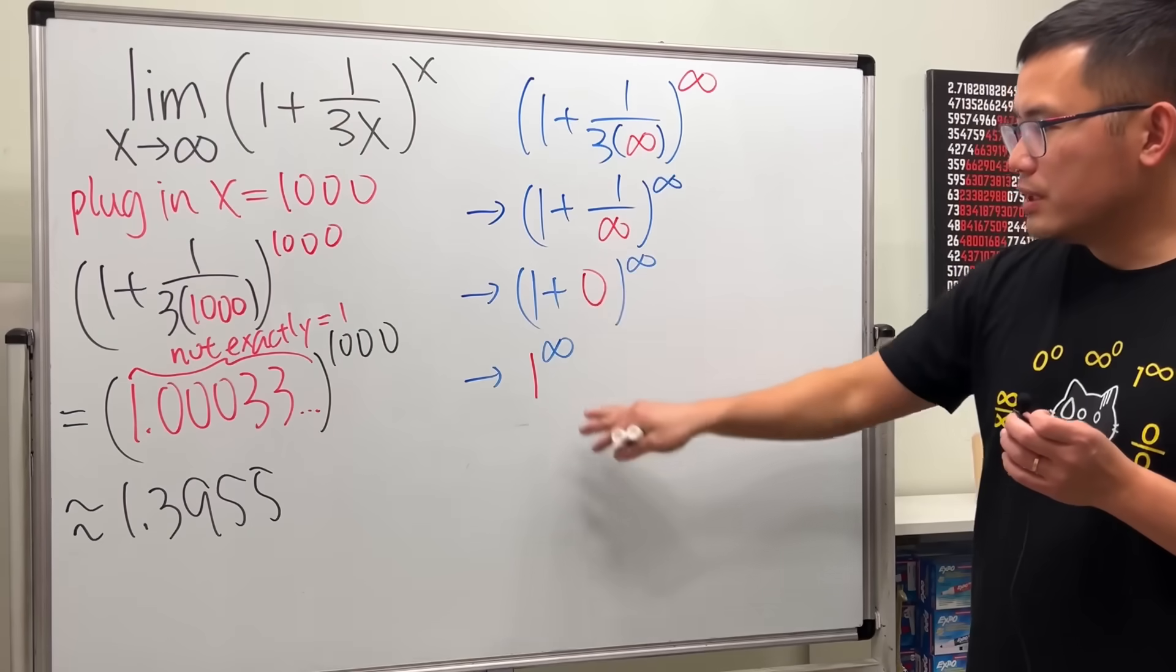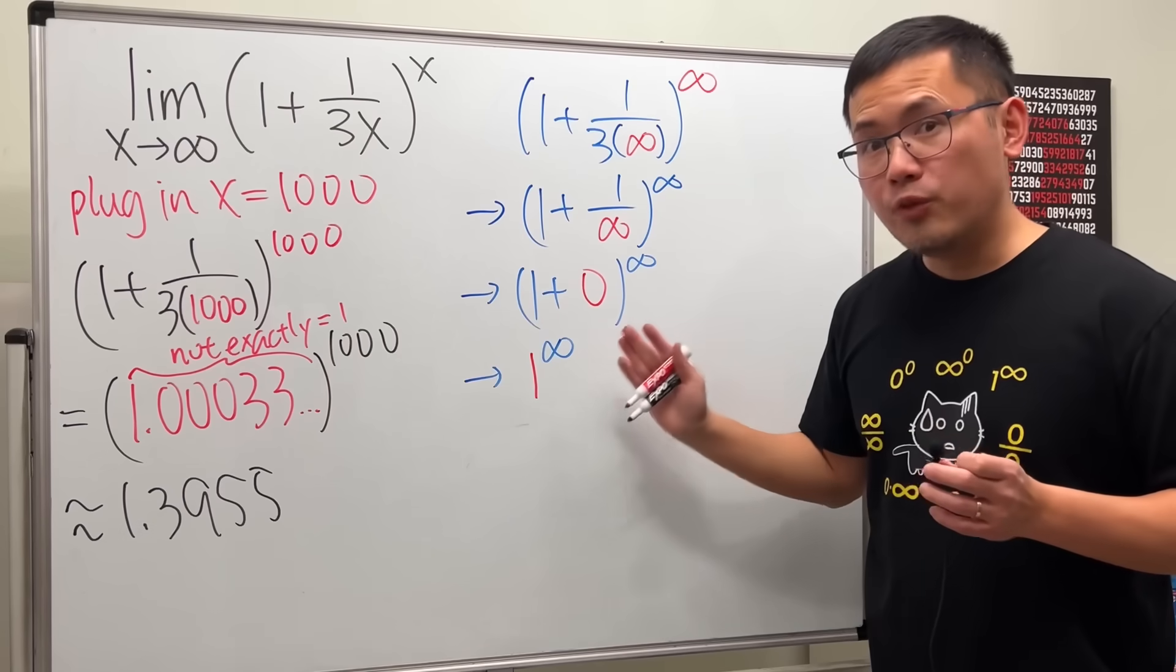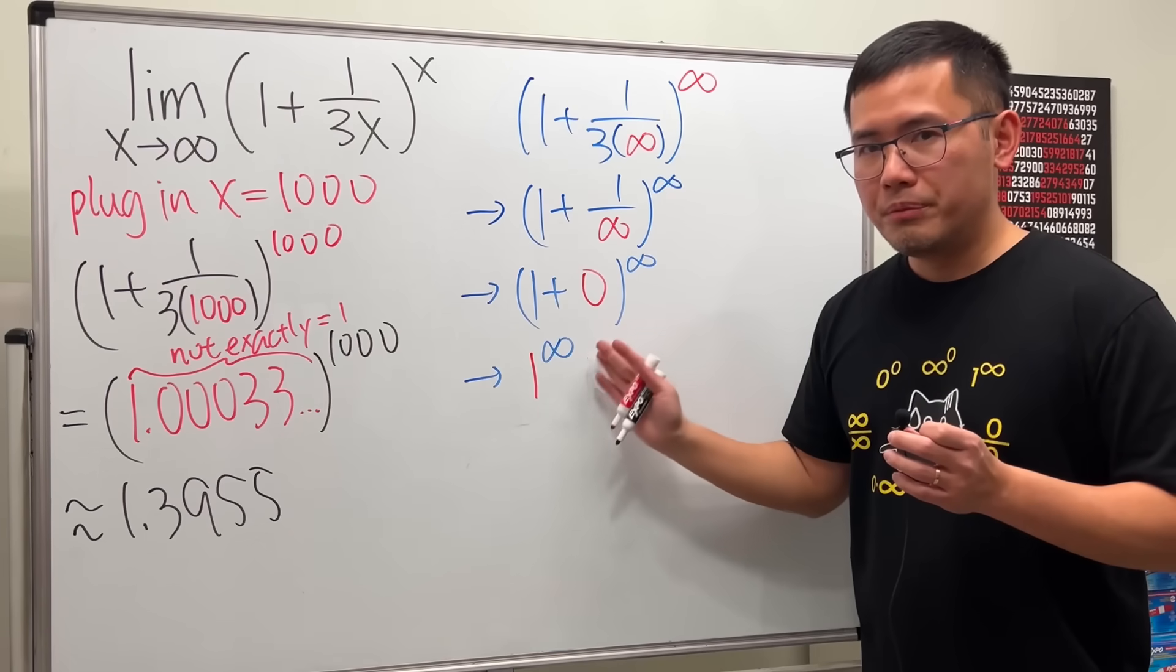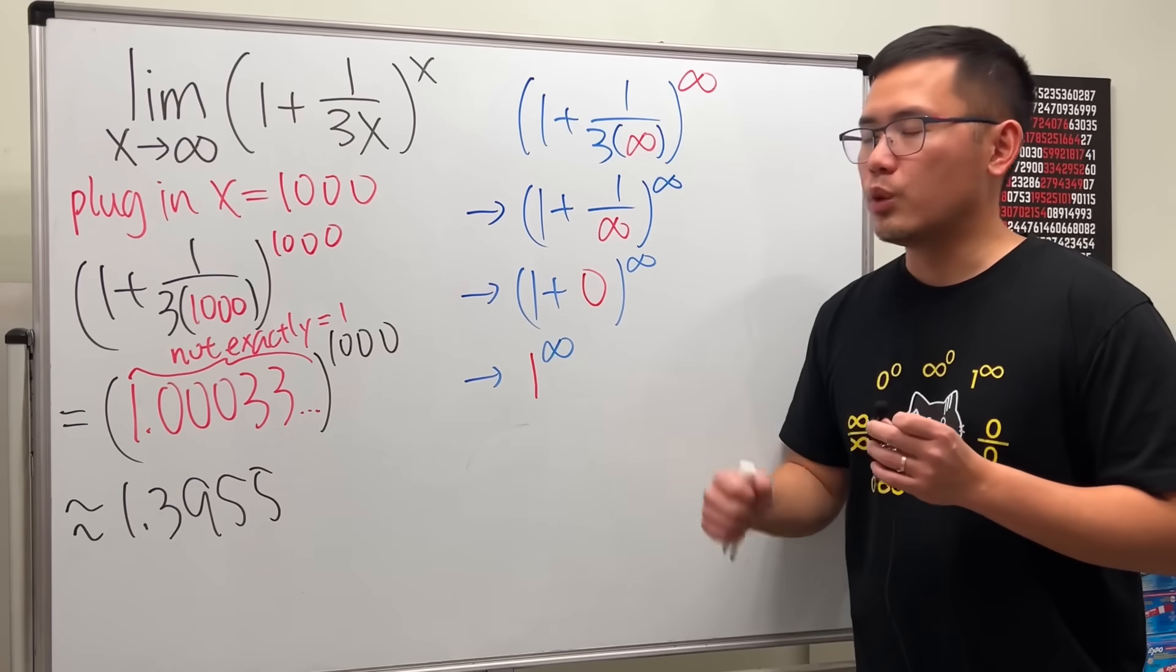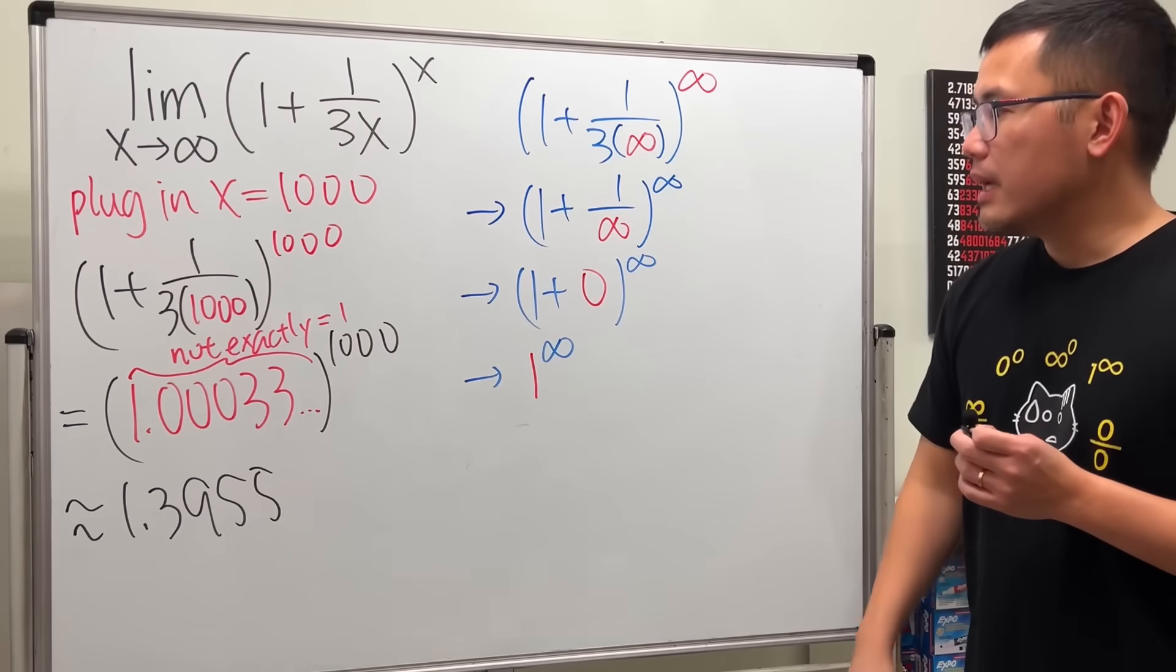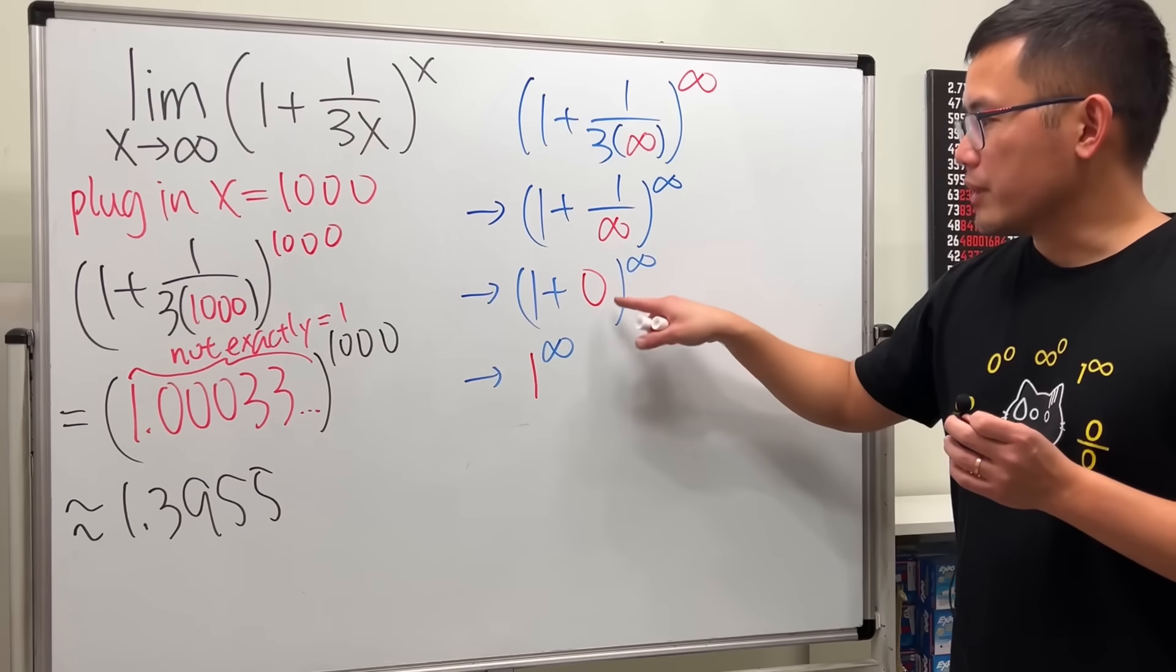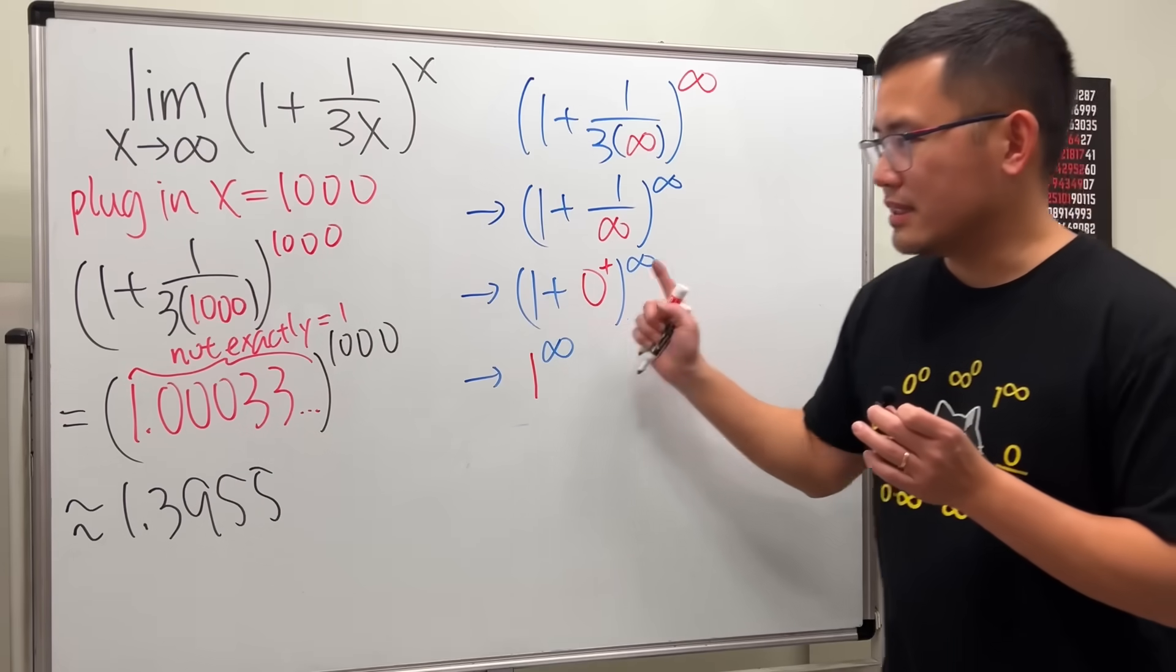So when people do this, it's just like a quick hand to figure out limits. So if you're working with the limit forms and end up with 1 to the infinity's power, be careful with it. This is an indeterminate form. We have to do more work in order to figure out the answer. For the 0, you might put a 0 plus.